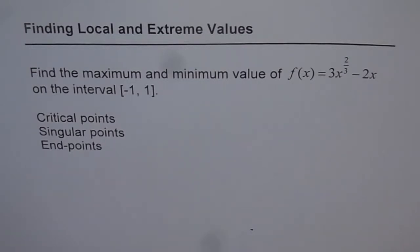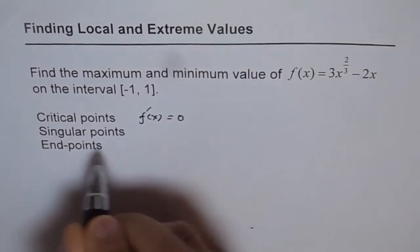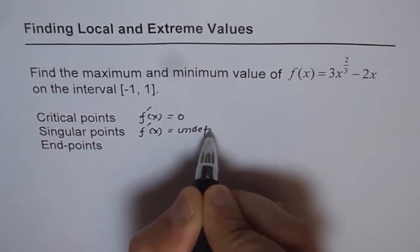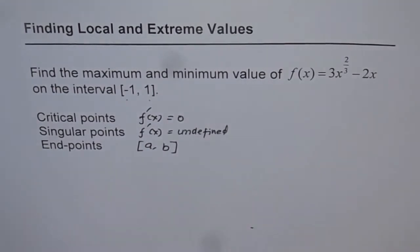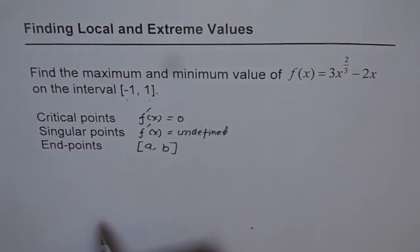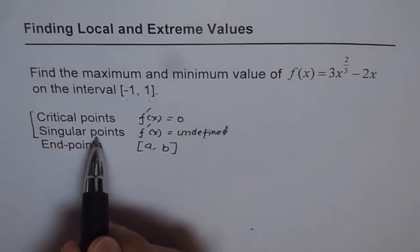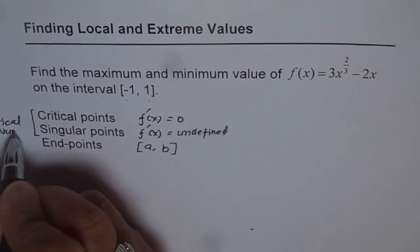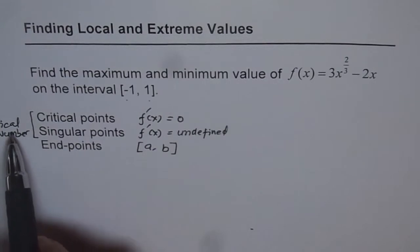I want to define these once. Critical points are normally the values where f'(x) = 0. Singular points are where f'(x) is undefined. End points are the boundary values — say from a to b. In most cases, we combine critical points and singular points and refer to them simply as critical points or critical numbers.